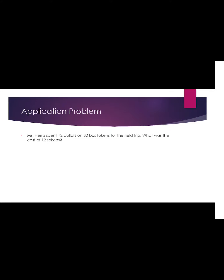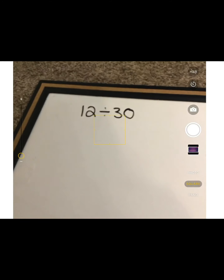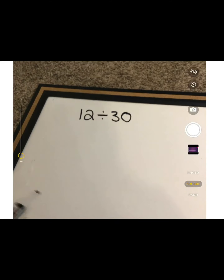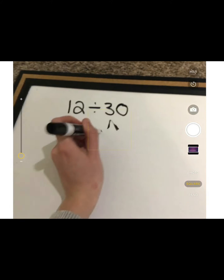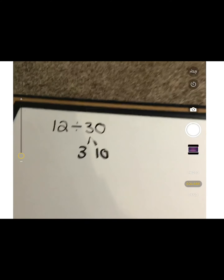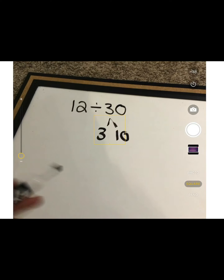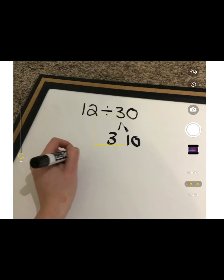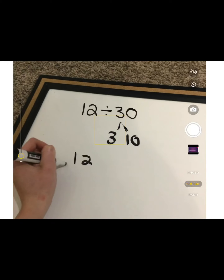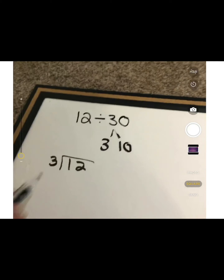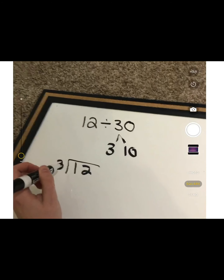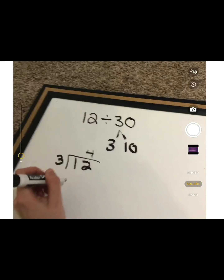Go ahead and write on your boards 12 divided by 30. When I see this problem, I know a lot of you are going to say, oh my goodness, 30 is a big number and I don't know how to divide 12 by 30. Well, let's decompose this 30 into 3 and 10, because 3 times 10 is 30. And then I can look at this 3 and say, I know 3 is a factor of 12. So 3 times 4 gives me 12.